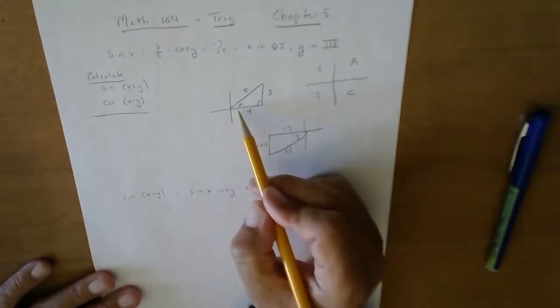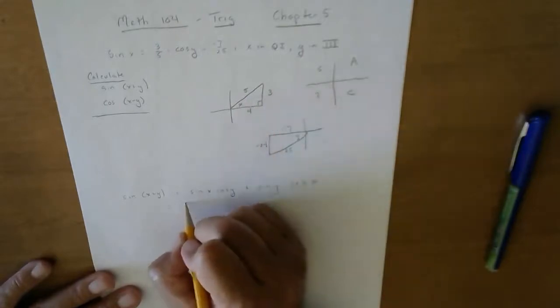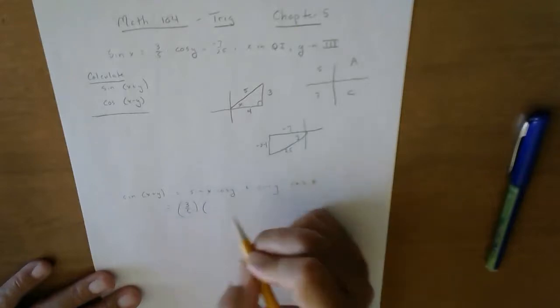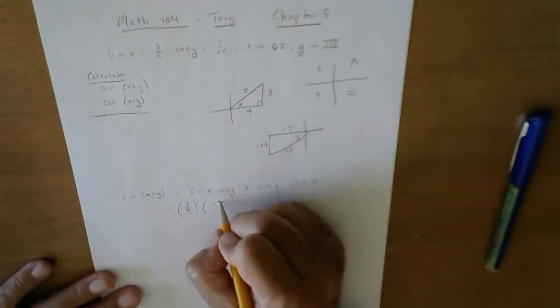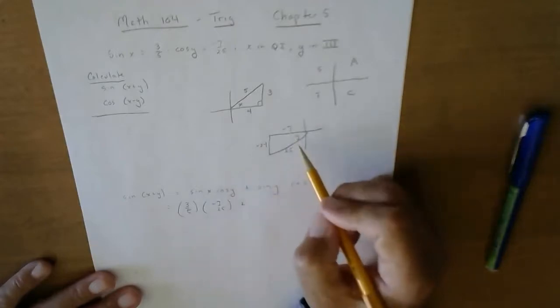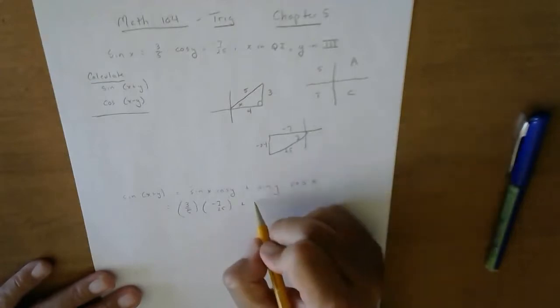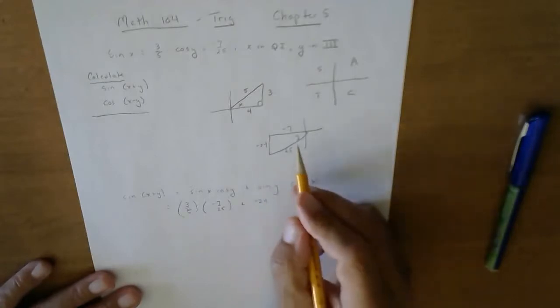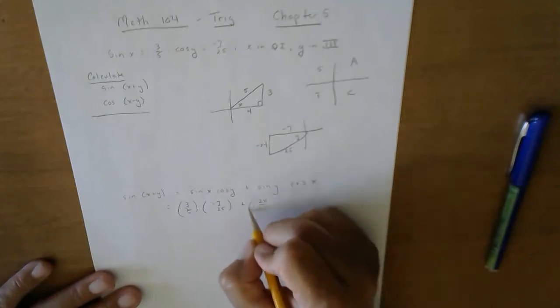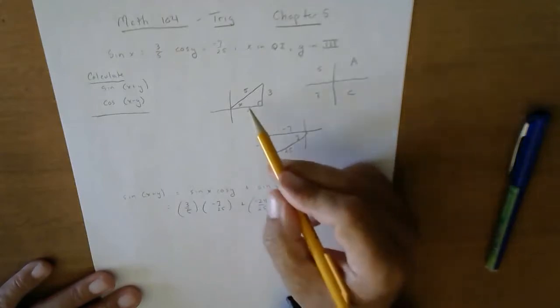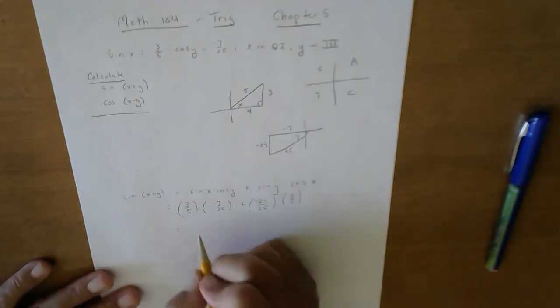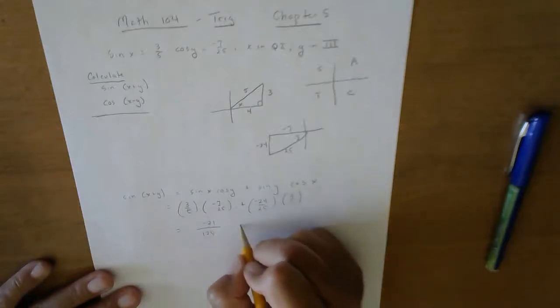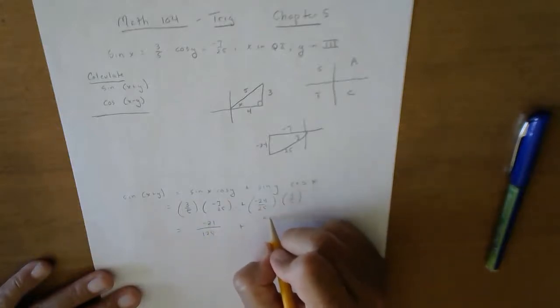Taking a look at this, the sine of x is three-fifths times the cosine of y, which is negative seven over twenty-five, plus the sine of y is negative twenty-four over twenty-five times the cosine of x, which is four-fifths. Common denominator for each of these is going to be one hundred twenty-five. There's negative twenty-one, and this would be negative ninety-six.